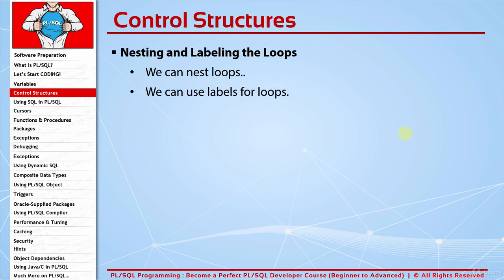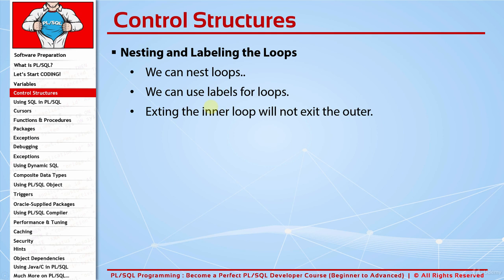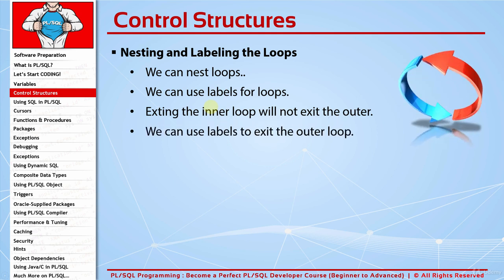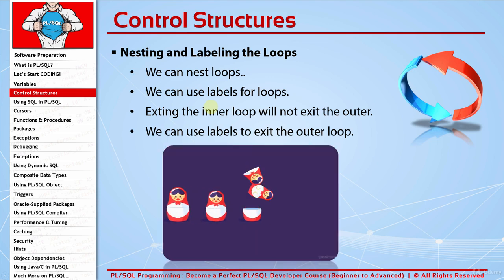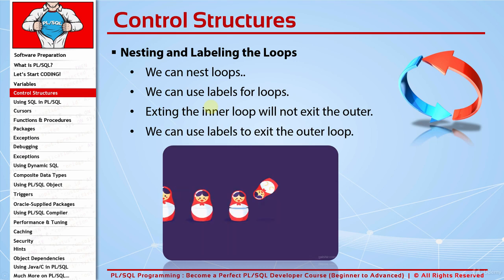We can use labels for loops, as we have seen in blocks. We write our label before the loop keyword. In basic loops, before the loop keyword; in while and for loops, before the while and for keywords. We can also write the label name at the end of the end loop statement to increase clarity. If you use an exit keyword inside an inner loop, it will only finish the corresponding inner loop, not the outer loop. But we can use labels to exit the outer loop.